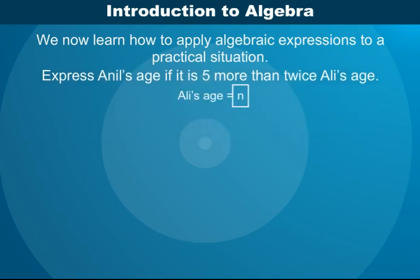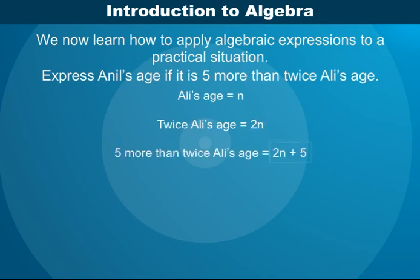Let Ali's age be N. Twice Ali's age is 2N. 5 more than twice Ali's age is 2N plus 5. Thus, Anil's age is 2N plus 5.